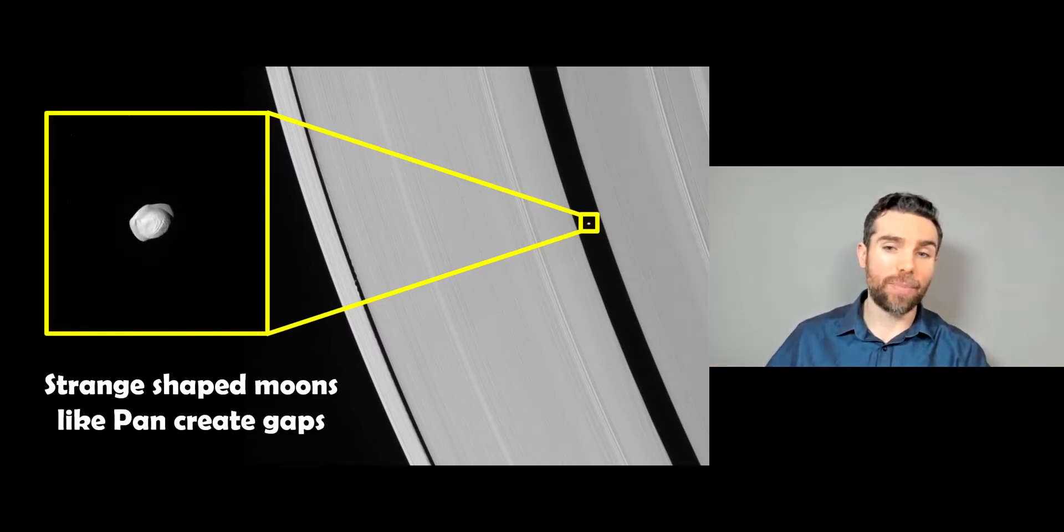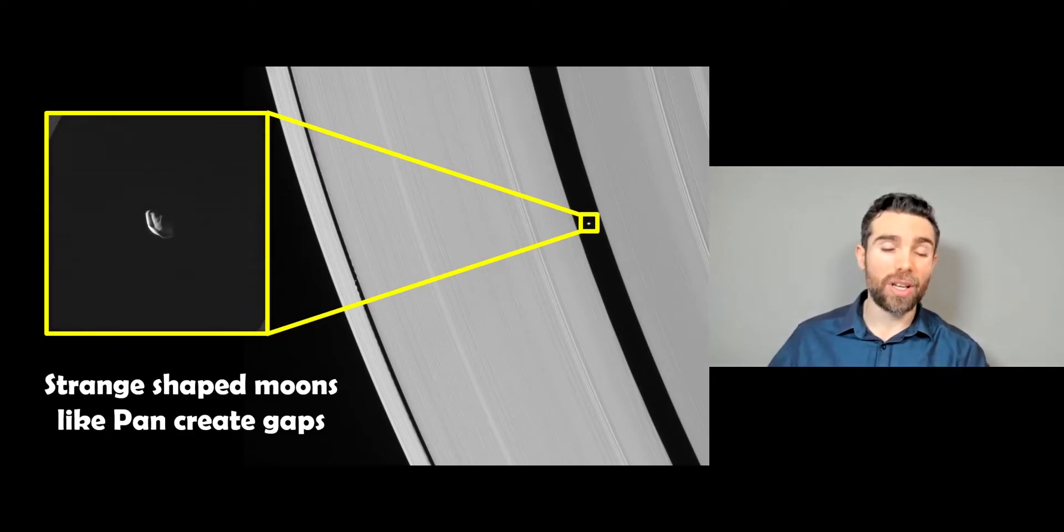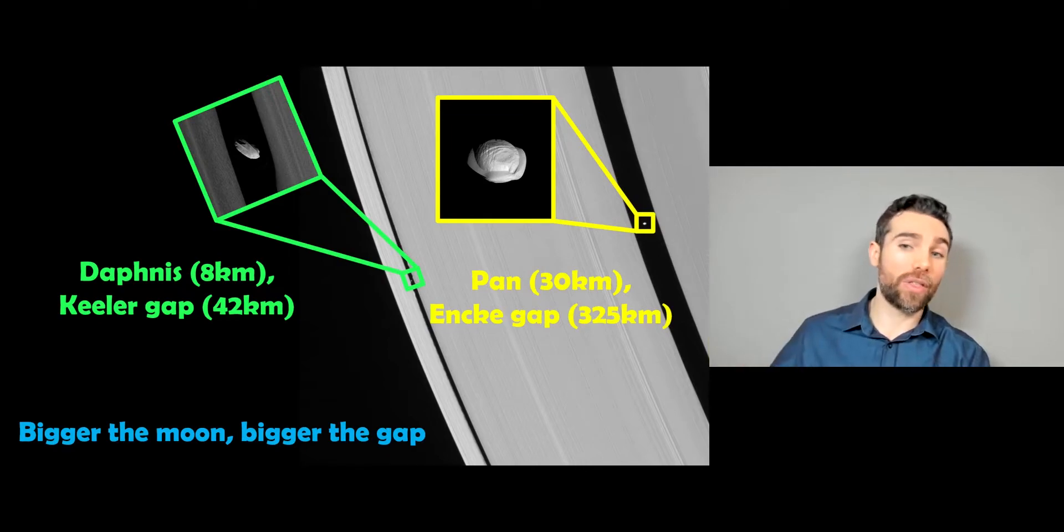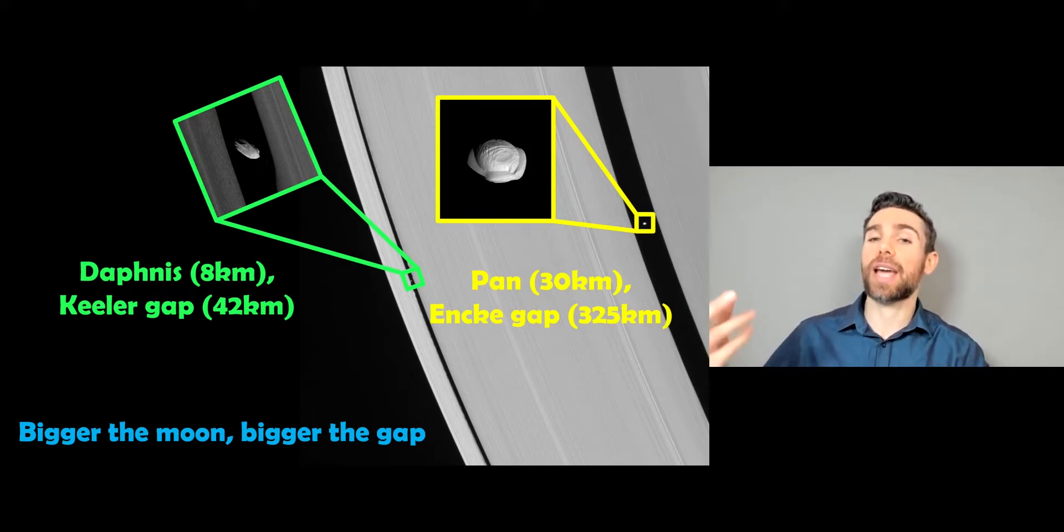You can see there's two gaps here. One of those is a smaller moon, so it's a smaller gap. These are like kilometer sort of size. So the two examples here, one is about eight kilometers in size, and one is about 30 kilometers in size. And the gap sizes scale with that mass of the moon. So actually you can use the gap size to calculate the mass of the moon.